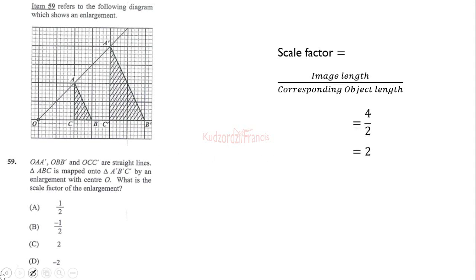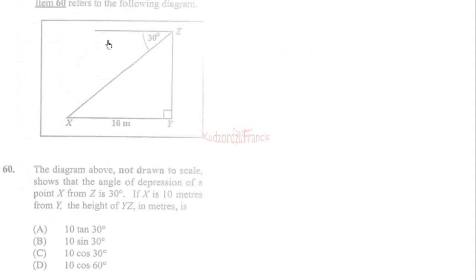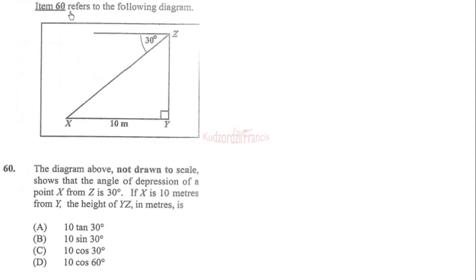Now our last question for this paper is this. Item 60 refers to the following diagram, not drawn to scale. The diagram shows that the angle of depression of a point X from Z is 30 degrees. If X is 10 meters from Y, the height of YZ in meters is?